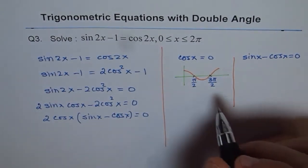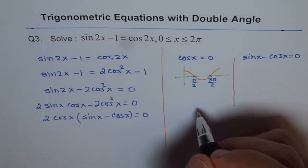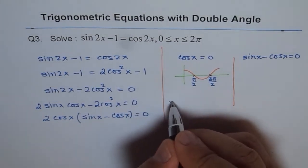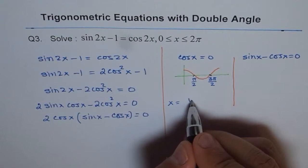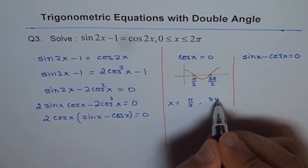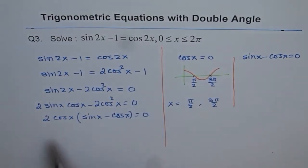Those are two possible solutions for us. We can write x equals π/2 or 3π/2. That comes from the first term, which is cos x equals 0.